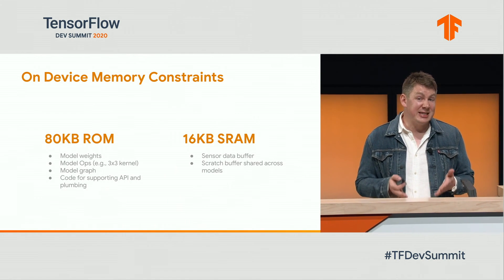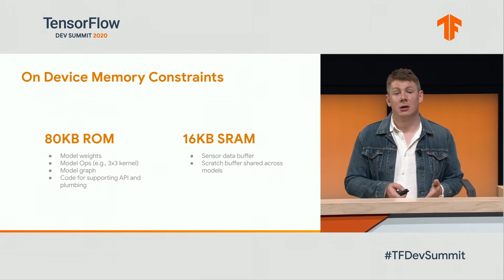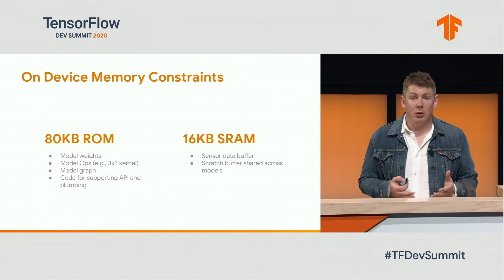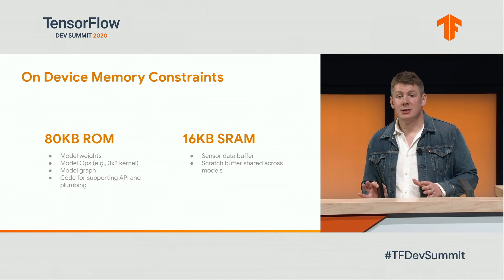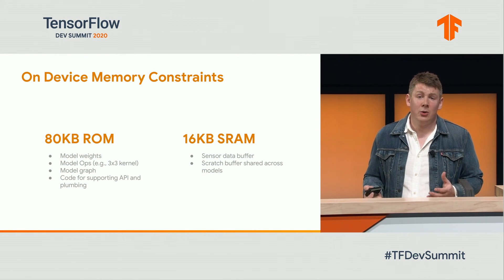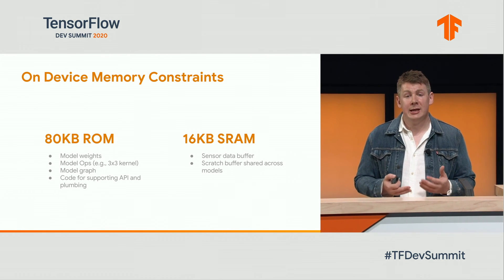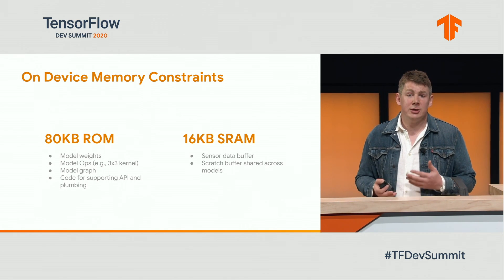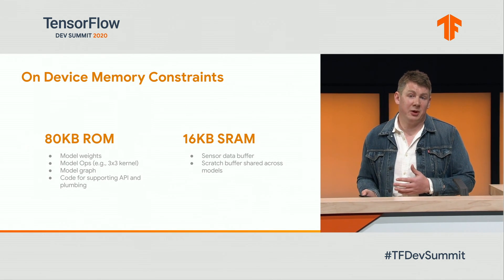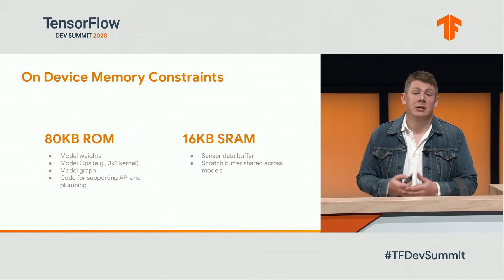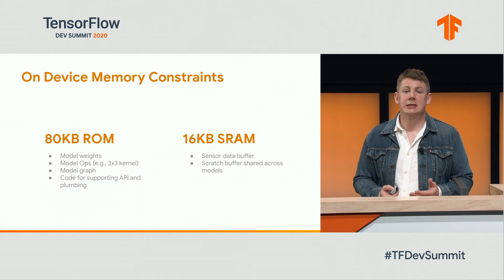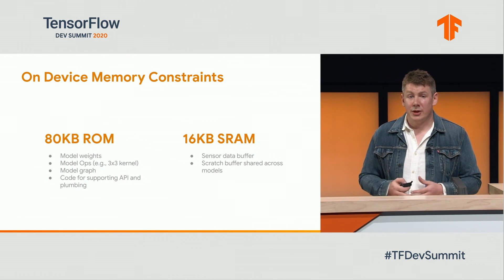Furthermore, this all needs to fit within the constraints of the Jacquard tag. For Gamer, we have around 80 kilobytes of ROM, which needs to be used not just for the model weights but also the required ops, the model graphs, and the supporting code required for plumbing everything together so it can be plugged into the Jacquard OS. We also have around 16 kilobytes of RAM, which is needed to buffer the raw IMU sensor data and also be used as scratch buffers for the actual ML inference in real time.